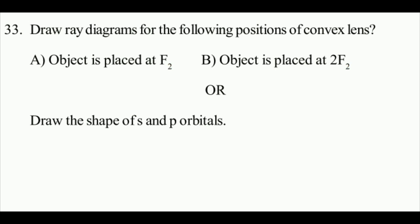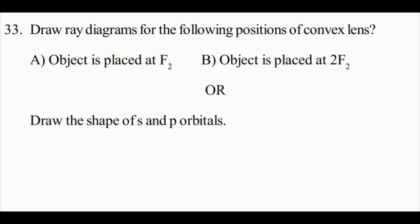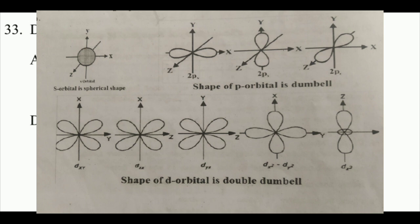The last question, diagram question. This is from the light chapter. Object is placed at F2. Light chapter has 6 ray diagrams, and S and P orbital diagrams.